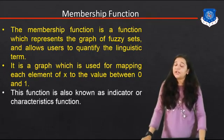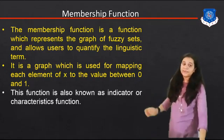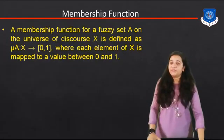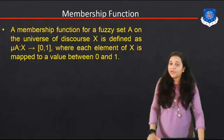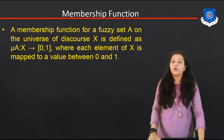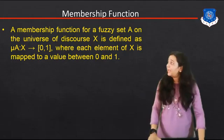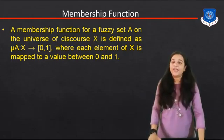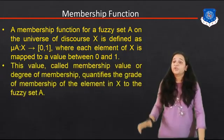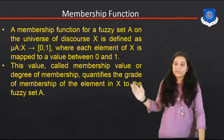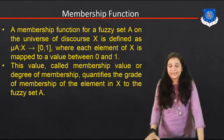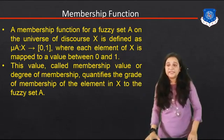This function is also known as the indicator or the characteristic rate function. A Membership Function for a fuzzy set A on the universe of discourse X is defined as X mapping to the interval [0, 1], where each element of X is mapped to a value between 0 and 1. This value is called the membership value, or the degree of membership, which quantifies the grade of membership of the element in X to the fuzzy set A.